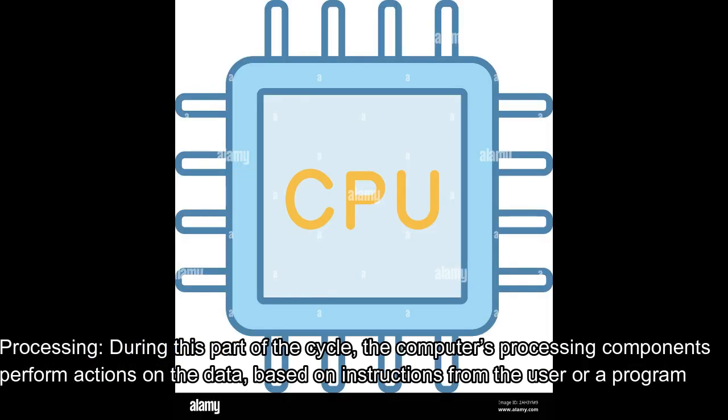The computer takes input as data, not as information. This data is then processed by the processor. Processing: During this part of the cycle, the computer's processing components perform actions on the data based on instructions from the user or a program. In this step, the main function is done according to the instructions given by the input.